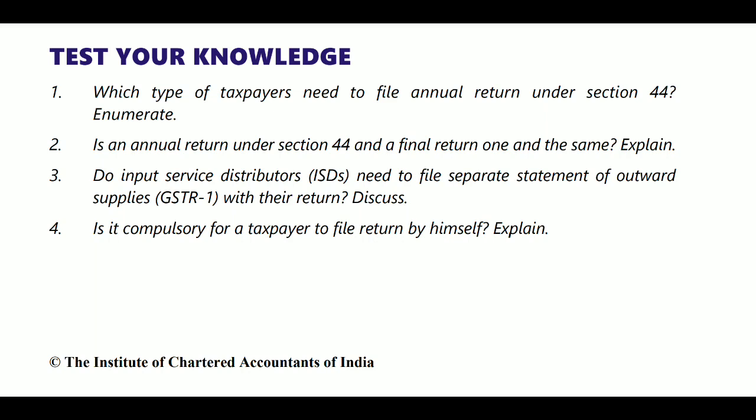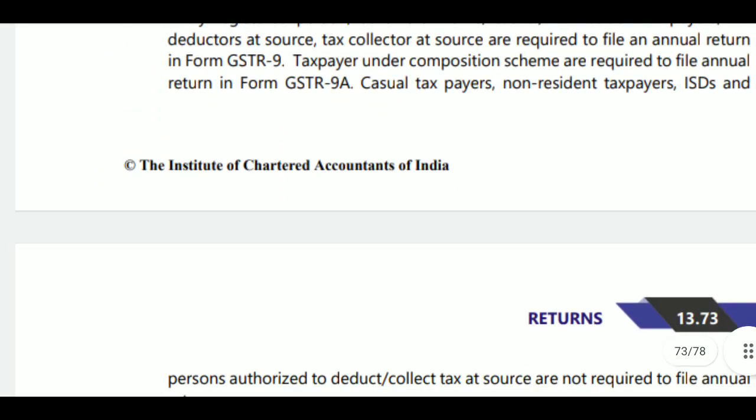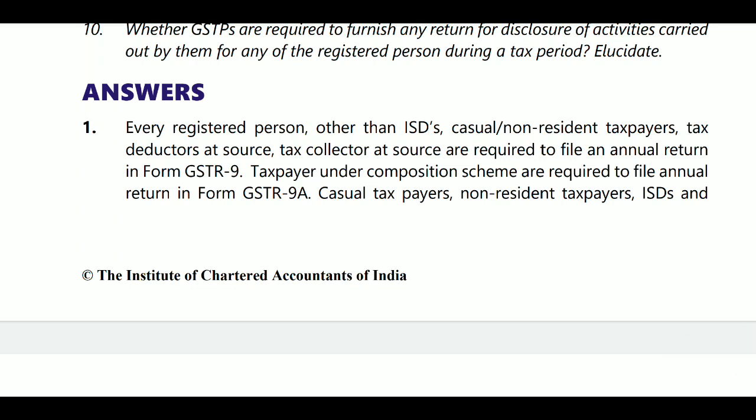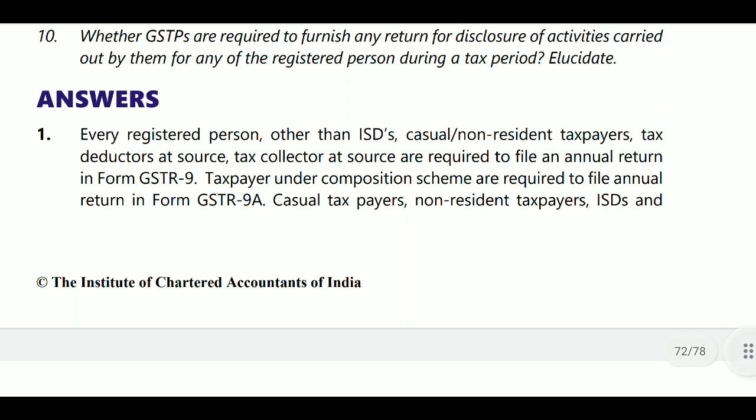Under Section 44, every registered person is required to file annual return except some persons. That is, every registered person other than ISD, casual taxable person, non-resident taxable person, TDS deductor (tax deducted at source), and tax collector at source are required to file annual return in Form GSTR-9.